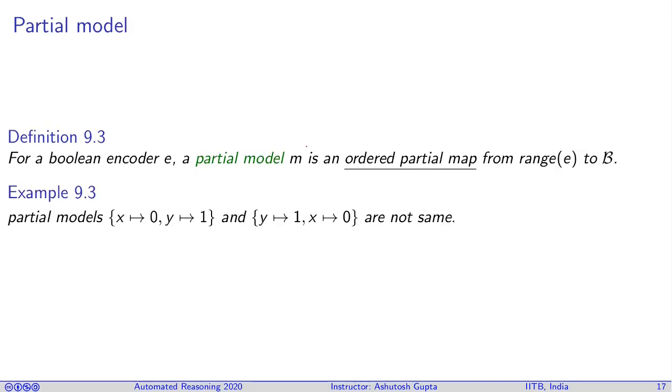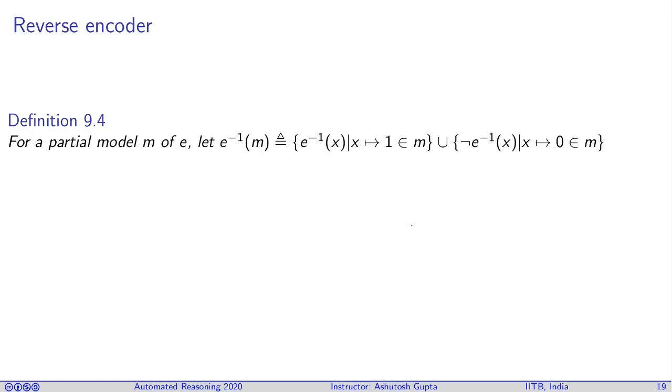Once you have a Boolean encoding, you have a set of Boolean variables, which is the range of the Boolean encoder. Then a partial model is assigning some of those variables to be true or false. You're not assigning the individual variables appearing in your formula; rather, you're assigning values to the fresh Boolean variables introduced during Boolean encoding. This is an ordered map, meaning variables are assigned in order. CDCL(T) proceeds by constructing partial models like CDCL, assigning one variable to another.